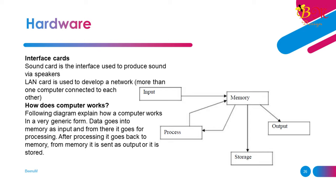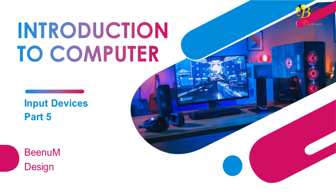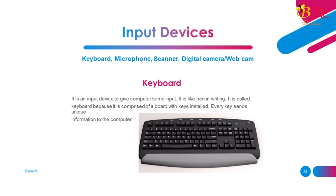Part 5: Input Devices. Input devices include keyboard, microphone, scanner, and digital camera/webcam. Keyboard: It is an input device used to give the computer input — it is like a pen in writing. It is called a keyboard because it is comprised of a board with keys installed. Every key sends unique information to the computer.